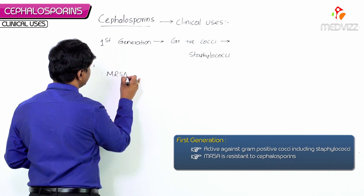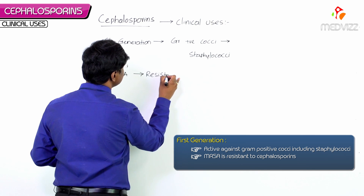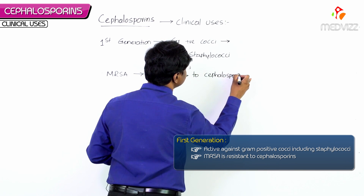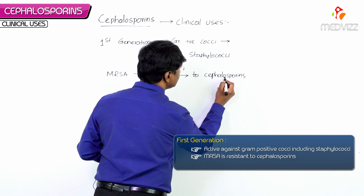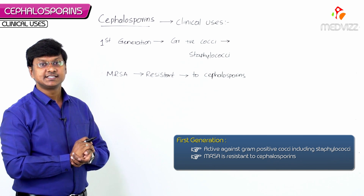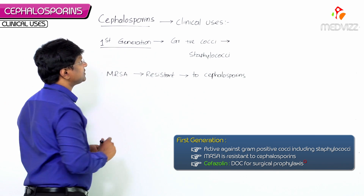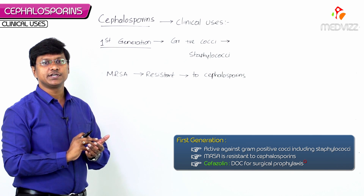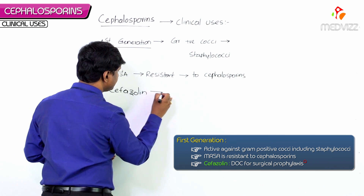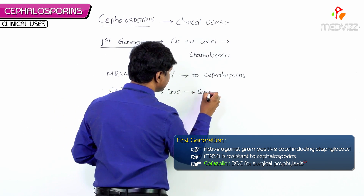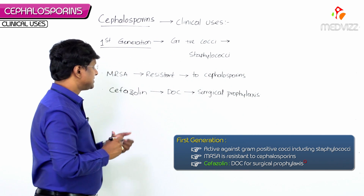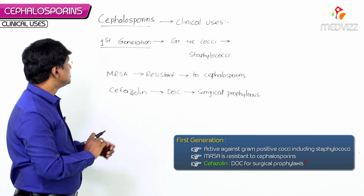Remember, MRSA is resistant to cephalosporins. Among the first generation cephalosporins, cefazolin is the drug of choice for surgical prophylaxis. This is a high-yield multiple choice question point.